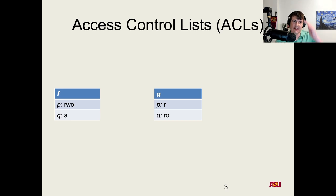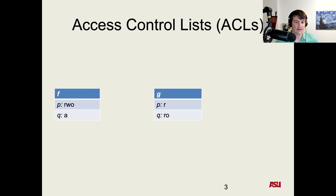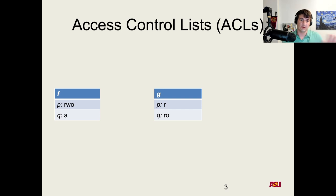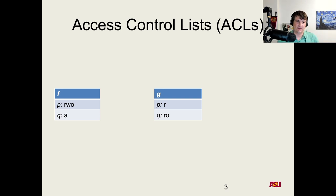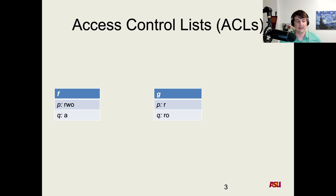Similarly, for object G, this access control list would specify that process P has write and read access, and process Q has read and ownership of that file. This is actually how a lot of modern systems work. The Unix model is an access control list model where metadata is stored about each file, and that metadata is the access control list specifying what process has access to what. So each column of the access control matrix is stored with the object as metadata.